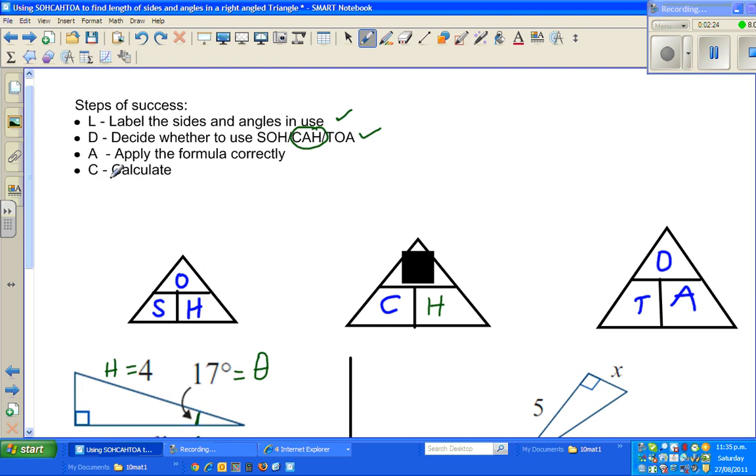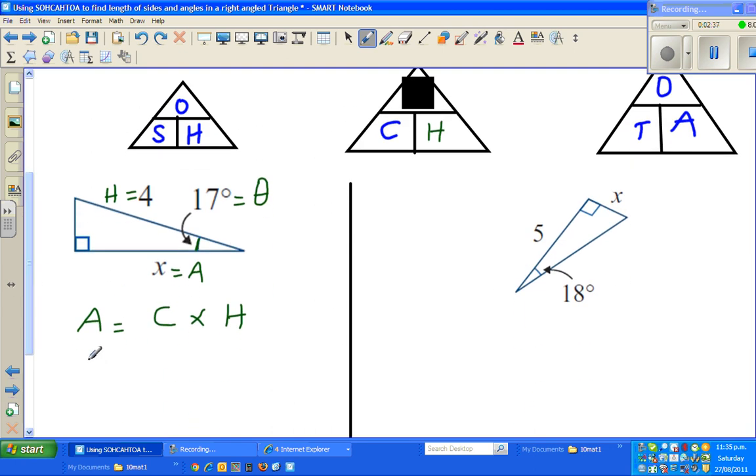You have to apply the formula correctly, and ultimately C which is calculate. L-D-A-C, which are the steps of success, which is S-O-S. S-O-S is famously for save our souls. So X is equal to, C stands for cos of the angle, cos theta. X is equal to cos theta times H. So X is equal to cos, what is theta? 17 degrees, times hypotenuse which is 4.